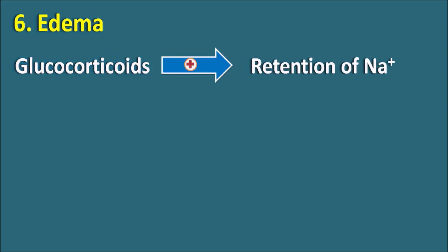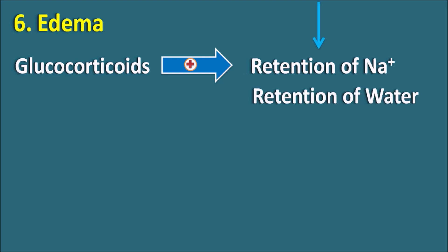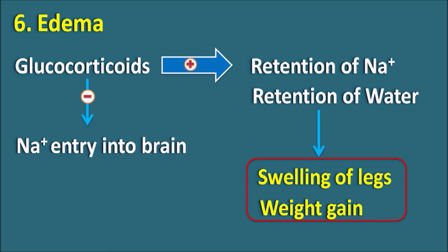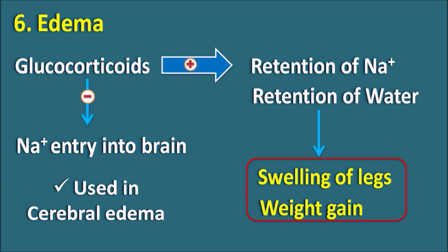The sixth side effect is edema. Glucocorticoids increase fluid retention — they promote retention of sodium as well as water, which may increase swelling of the legs and weight gain. They can also produce unequal distribution of fat, causing buffalo humps. Interestingly, these drugs can also be used in the treatment of edema — by affecting sodium transport, they can reduce sodium entry into the brain, reducing cerebral edema. However, they mainly produce peripheral edema with swelling of the legs and increased body weight.